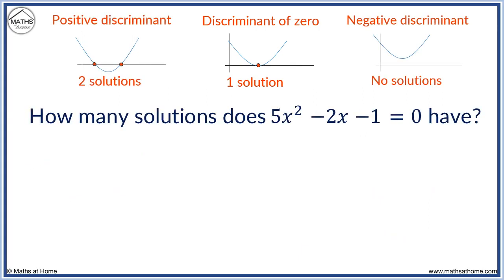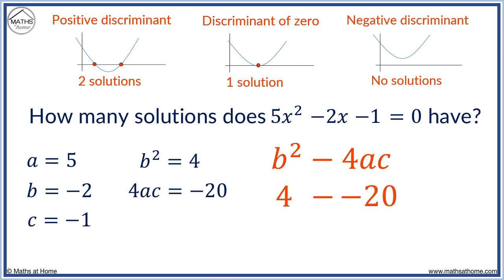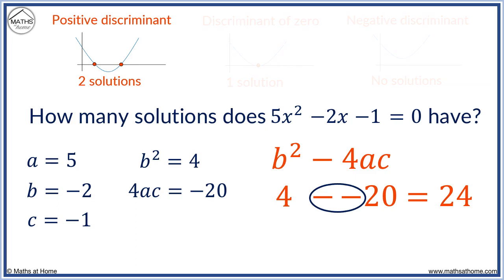How many solutions does 5x squared minus 2x minus 1 equals 0 have? a equals 5, b equals minus 2, and c equals minus 1. b squared is minus 2 times minus 2, which equals plus 4. b squared is always positive. 4ac is 4 times 5 times minus 1, which equals minus 20. b squared equals 4, and we subtract 4ac, which is minus 20. To subtract a negative, we add. 4 add 20 equals 24. Watch out for examples with a negative value of 4ac, as we will always need to do an addition when we subtract a negative number. The discriminant is 24, which is a positive number. Therefore, we have two solutions.